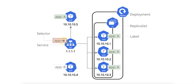There are different types of services. ClusterIP is the default service type and exposes the service within the cluster — pods inside the cluster can access it but it's not accessible from outside. NodePort exposes the service on a static port on each node, making it accessible from outside the cluster via node-IP:node-port. LoadBalancer automatically provisions an external load balancer (cloud-provider dependent) that forwards traffic to the pods. ExternalName maps a service to an external DNS name, allowing the service to refer to an external resource.